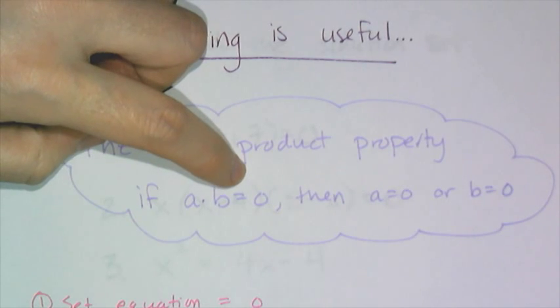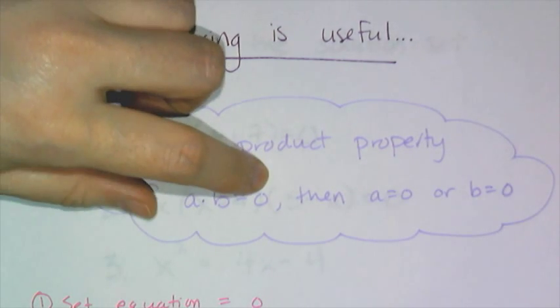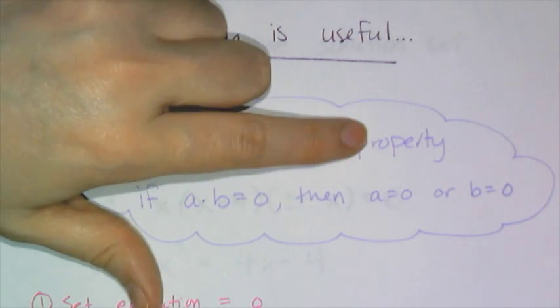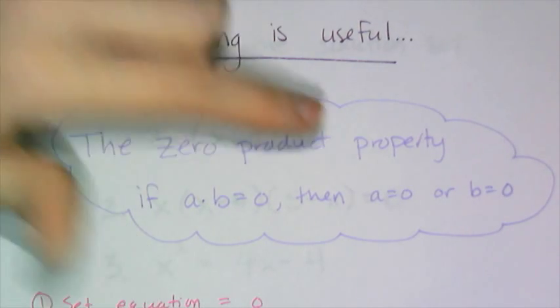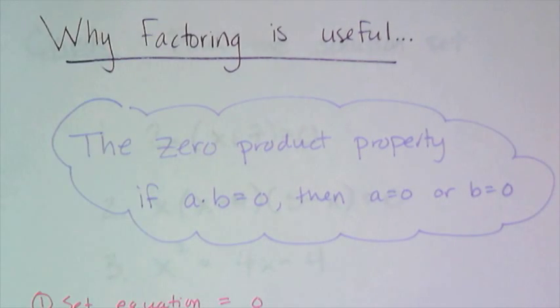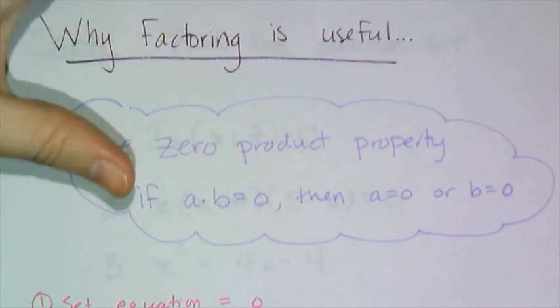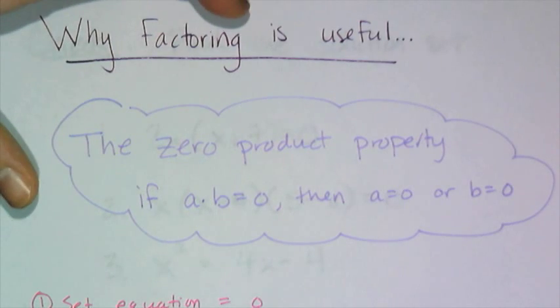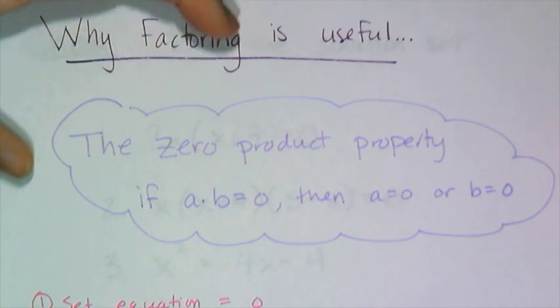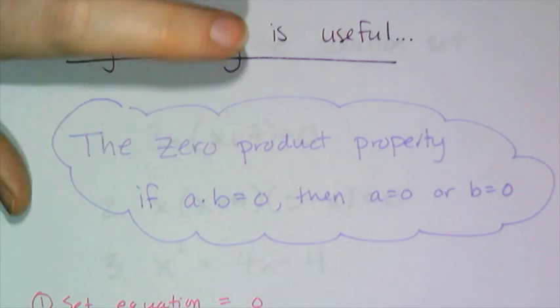So you have two numbers whose product is zero, one of those numbers has to be zero. That's something we kind of take for granted, but quite literally it makes factoring the nicest way to solve a quadratic or any other polynomial equation for that matter.